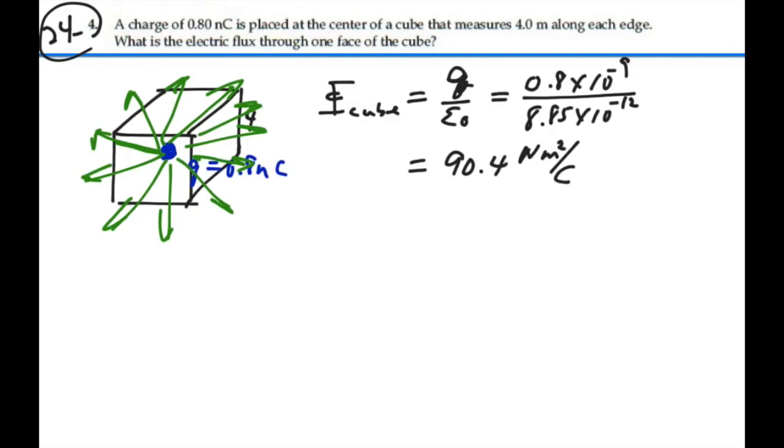So that is the total flux that is exiting this cube. We want to find the flux that is going through one face, and so that would be just one-sixth of this total flux.